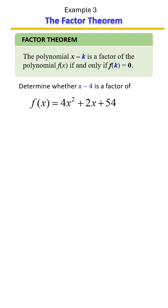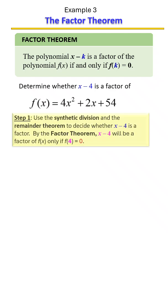Using the plug-in method, you can plug in a 4 everywhere you see an x. Do the math and see if you get a 0 out. We're going to use the synthetic division method, which means we're going to have a 4 on the outside of the division symbol.